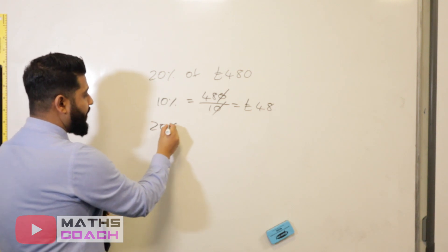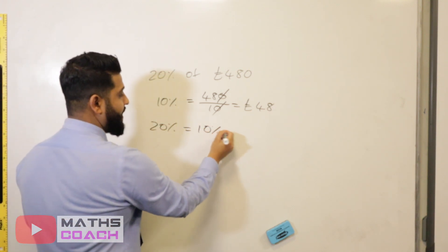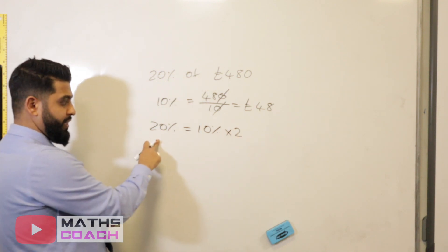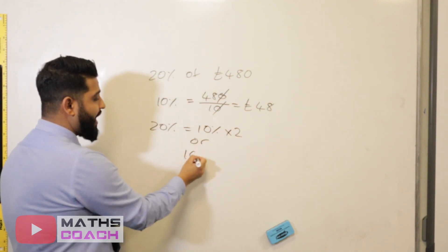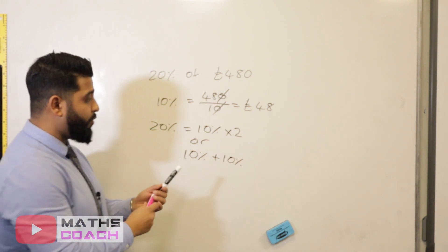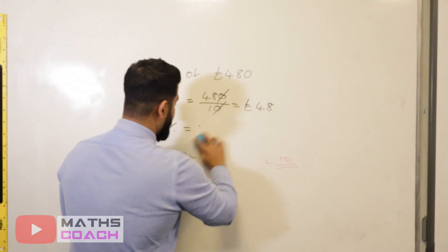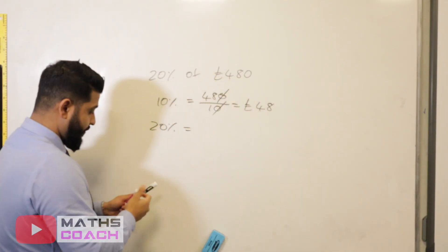Now once we've done that, to find 20%, we've got two options. We can either take 10% and times it by two to give us 20%, or we can add two lots of 10%. So to multiply 48 by two, we can get 96 pounds. I'll just show you an addition of that.